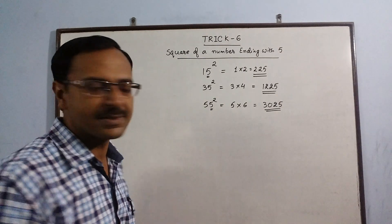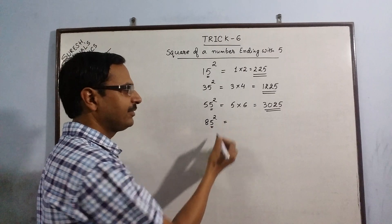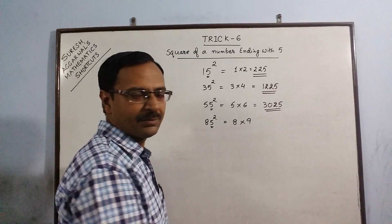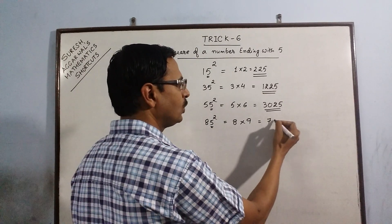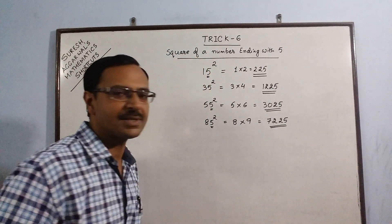Come to higher numbers. Say 85. Forget the 5. 8 multiplied by its next number 9 gives us 72. Put a 25. 7225 is the square of 85.